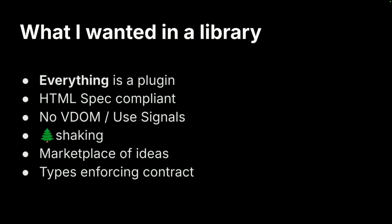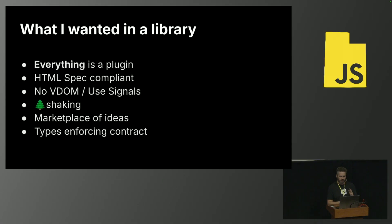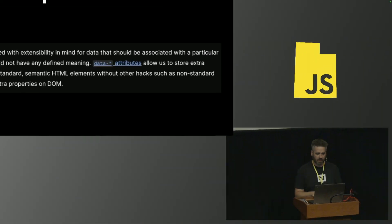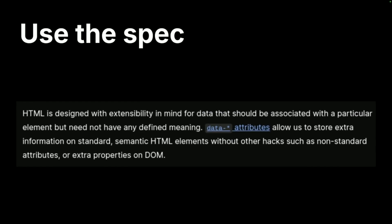I've bounced off a ton of libraries and have strong opinions. I ended up saying I need something to fit my needs. At the bottom, I'm using TypeScript if I have to use JavaScript. I wanted everything to be a plugin — to be able to be wrong about my assumptions but right about the general idea. I wanted to be spec compliant. I'm so glad signals are becoming popular; I've been following Solid.js for years. And I wanted a marketplace of ideas. Part of the spec is that on every element you can add a 'data-*' attribute — a key-value of string/string that you can do whatever you want with.